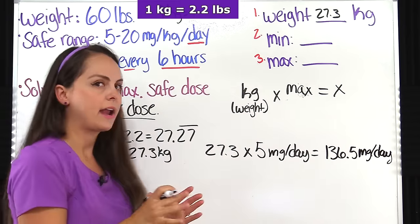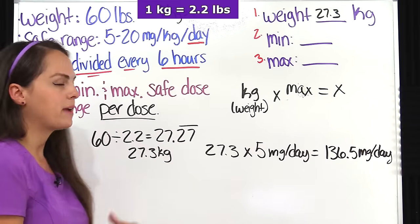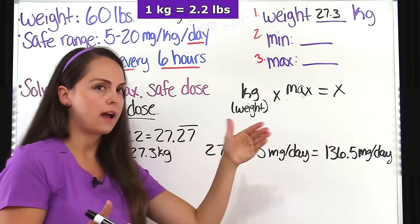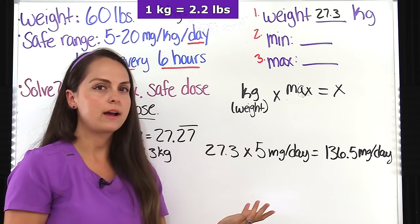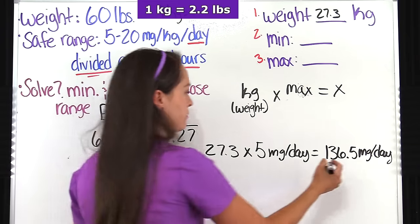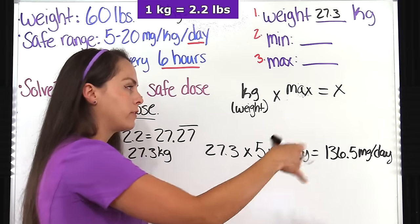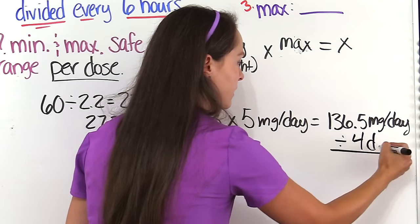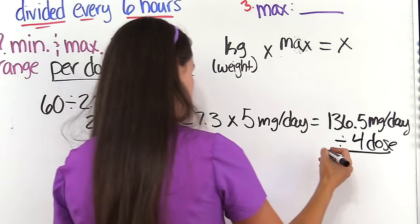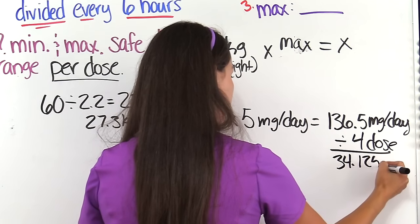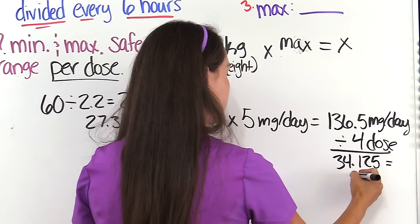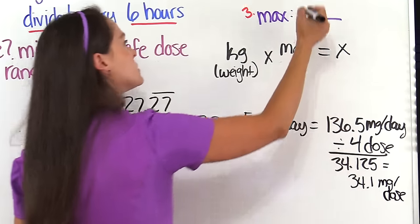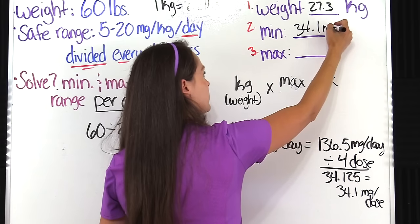That's the minimum amount they can have per day, but our problem asks per dose. We know there are 24 hours in a day, and the patient needs it every six hours, so dividing 24 by 6 gives us 4 doses per day. We divide 136.5 by 4, which gives us 34.125, rounded to the nearest tenth: 34.1 milligrams per dose. That is our minimum dose.